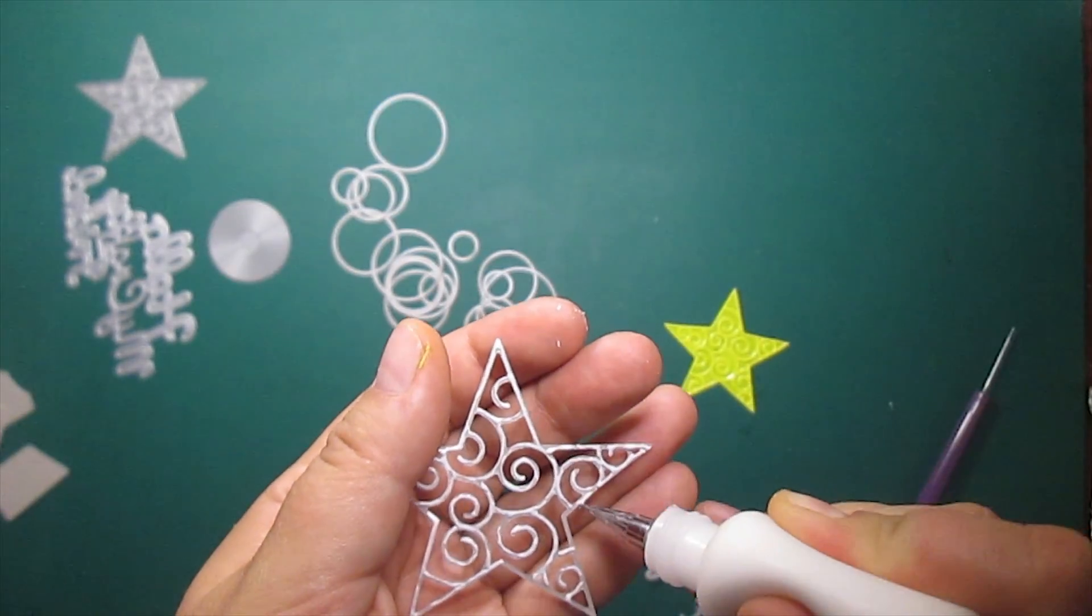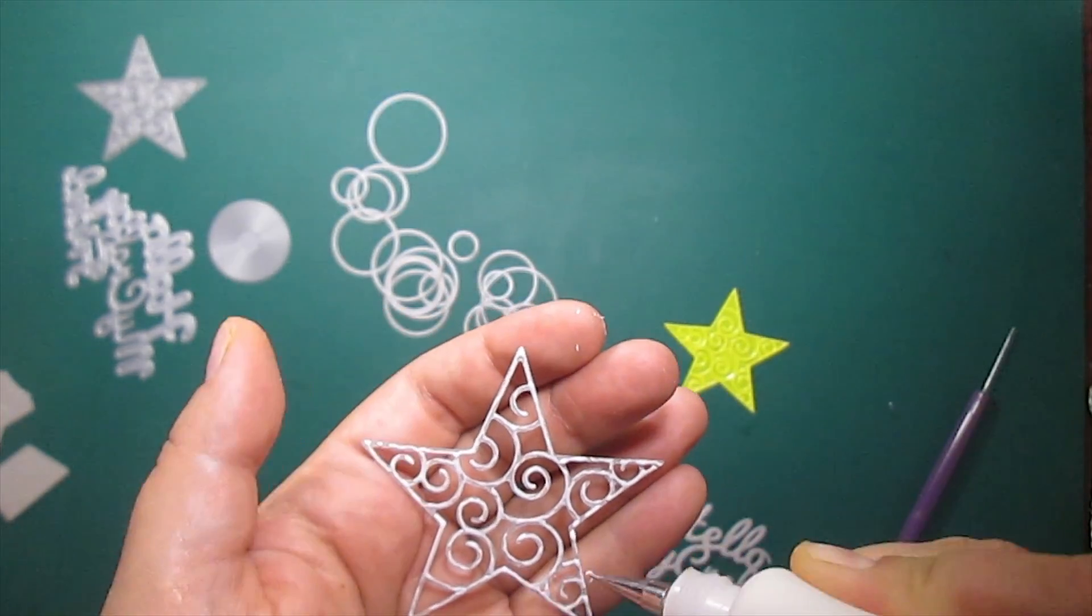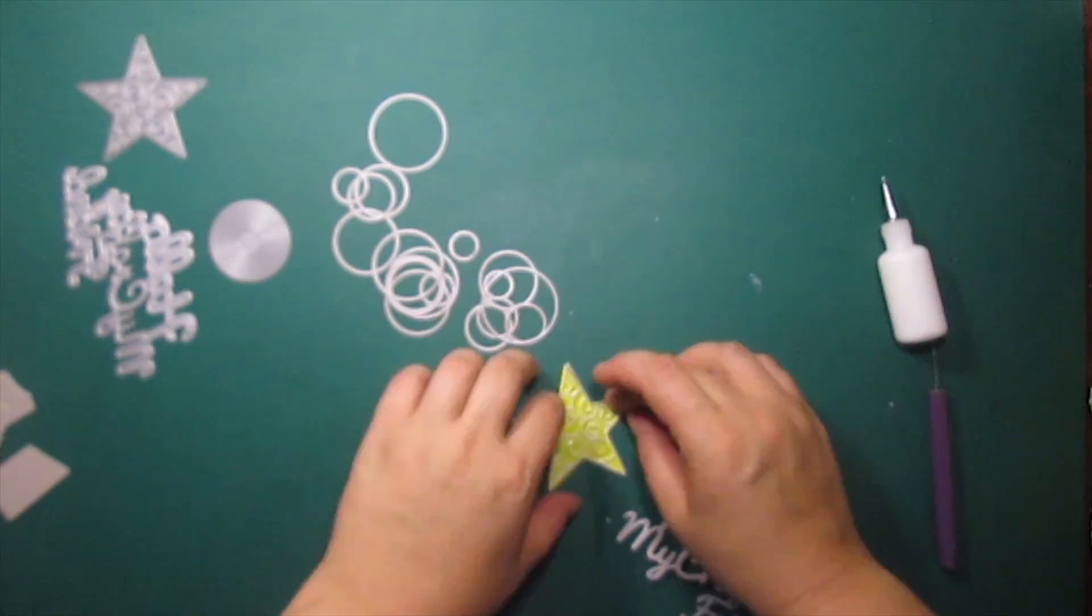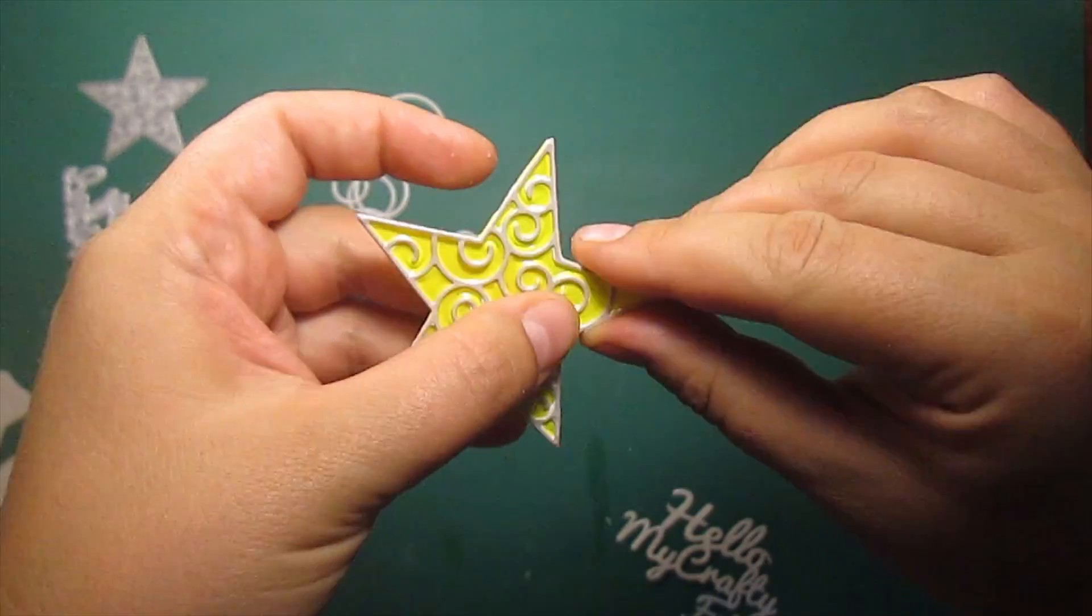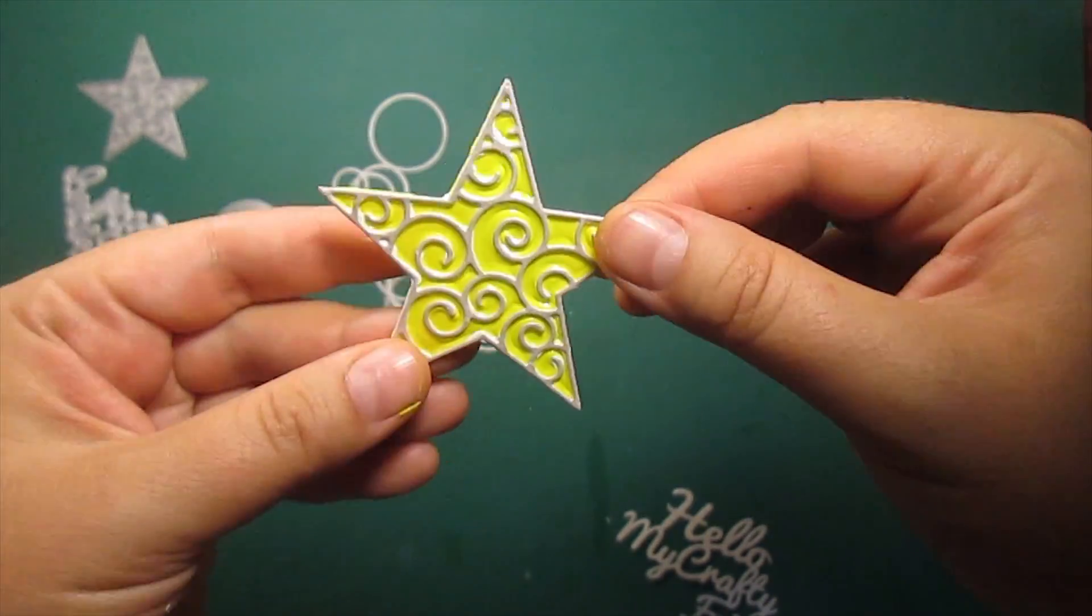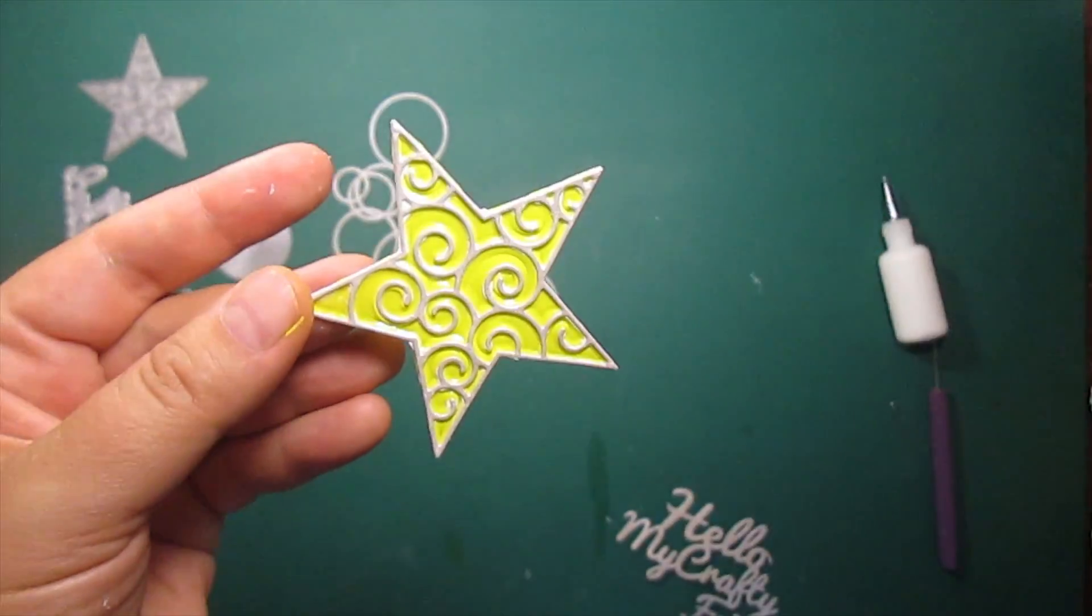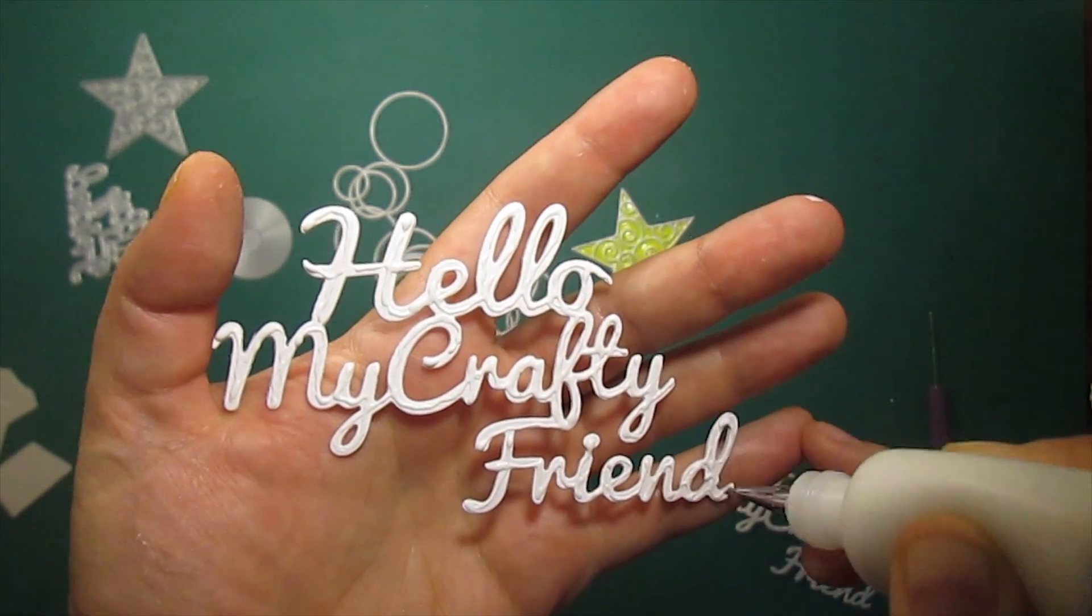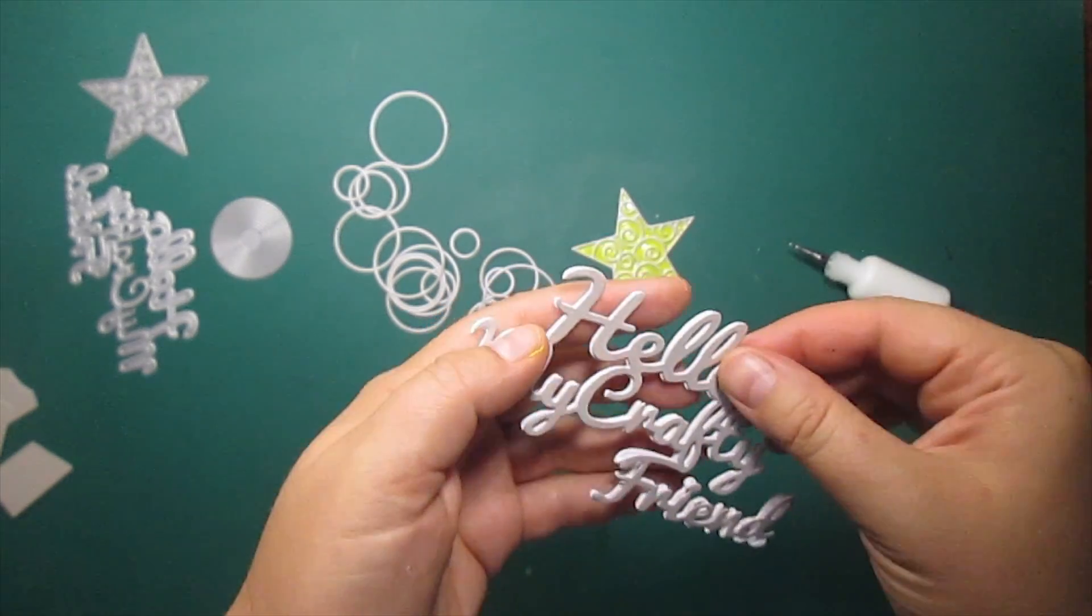Then I'm sticking the silver star outline on top of a piece I've made before and this will give us a nice embellishment that looks just like enameled jewelry. To give a sentiment more dimension I'm gluing three die cuts one on top of another.